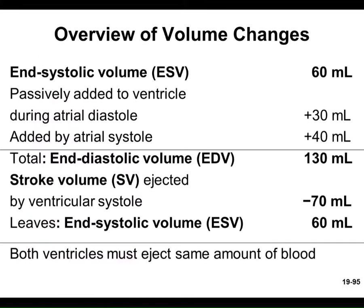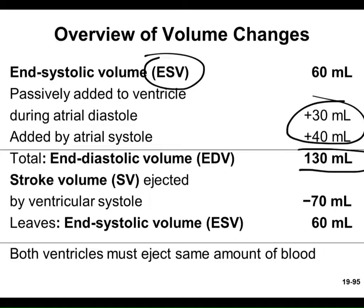Putting the numbers on a table: ESV — end systolic volume, the volume at the end of the squeeze — averages 60 mL. When the AV valve opens and the ventricles refill, 70 mL comes in, giving a total EDV of 130 mL. Then we squeeze — the stroke volume ejected is 70 mL — and we're back to 60 mL ESV. It's just an accounting page: start with 60, add 70, lose 70.